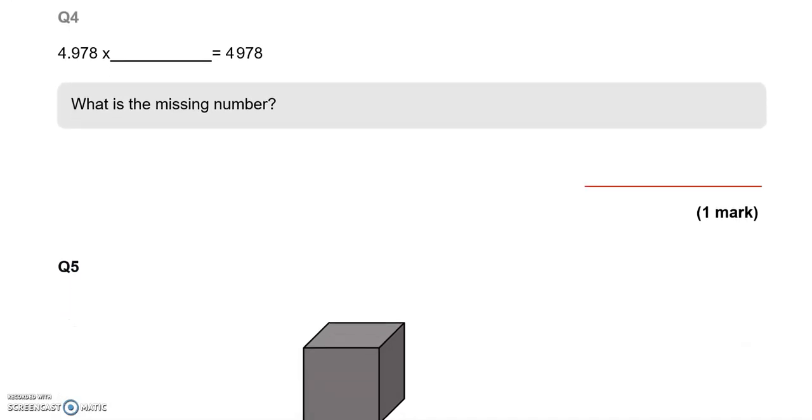Question number 4. 4.978 times what makes 4,978? What's the missing number? So looking at the digits, they are the same. We've got 4, 4, 9, 9, 7, 7, 8, 8. What's happened is that the decimal point has moved 3 places to the right. So it's gone 1, 2, 3.